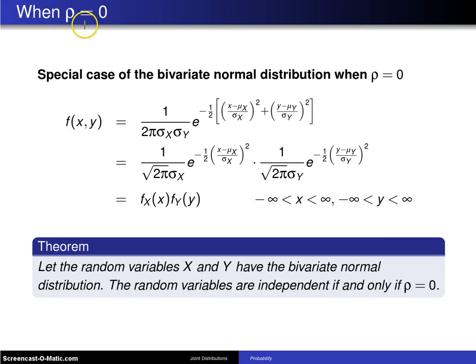This slide considers the case when rho, the correlation, is equal to 0 in the bivariate normal distribution.